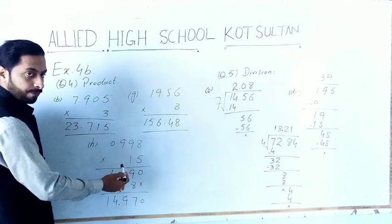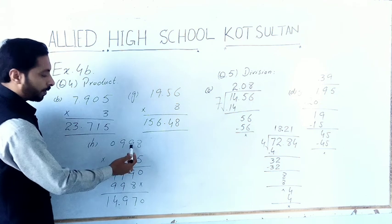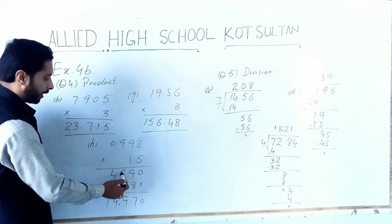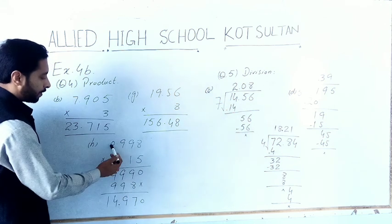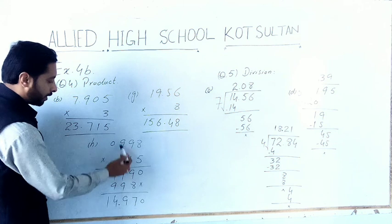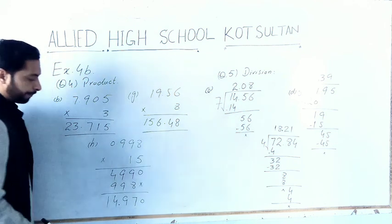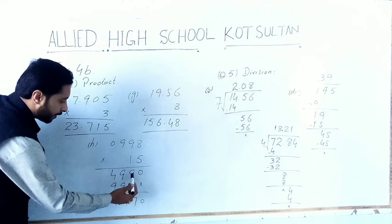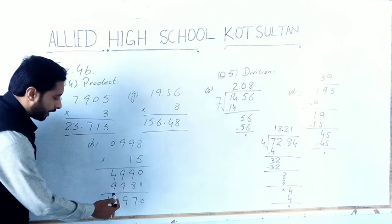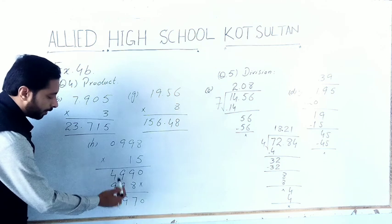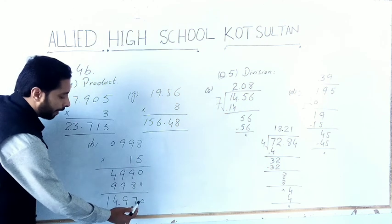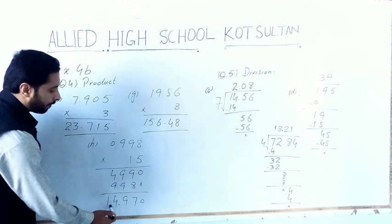First we multiply by 5: 5 × 8 = 40, carry 4. 5 × 9 = 45 + 4 = 49, carry 4. 5 × 9 = 45 + 4 = 49. Then multiply by 1: 1 × 8 = 8, 1 × 9 = 9, 1 × 9 = 9. Adding: 9 + 8 = 17, carry 1. 9 + 9 + 1 = 19, carry 1. 9 + 4 + 1 = 14, carry 1. Result: 1, 4, 9, 7, 0. We place the decimal point after three digits and the answer will become 14.970.